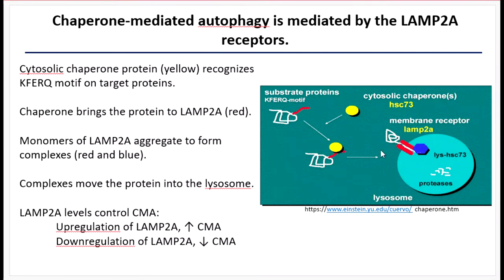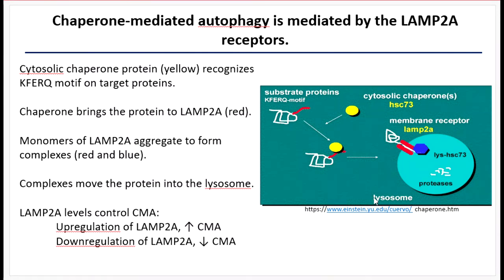Once that occurs, the complex will move the protein into the lysosome, unfolding it and moving it in as a single primary structure polypeptide. Within the lysosome, proteases bind peptide bonds and break them, resulting in the formation of single amino acids. The regulation of this process is through the amount of LAMP2A bound on the outside of the lysosome — more LAMP2A increases CMA, less LAMP2A decreases it. The amount of LAMP2A depends on hormone signals in the body that signal starvation or fasting.